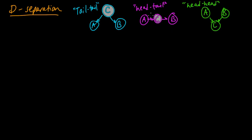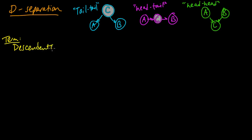In order to introduce D-separation, we need a little bit of terminology and a couple of definitions. First, a standard graph theory term: the descendants of a vertex in a graph.